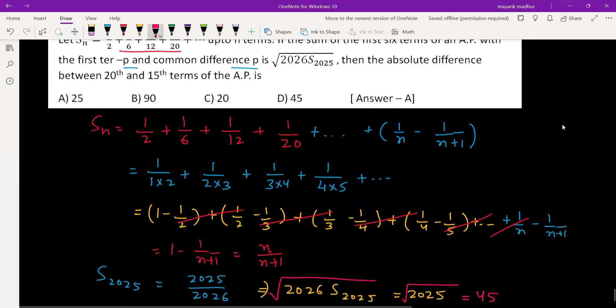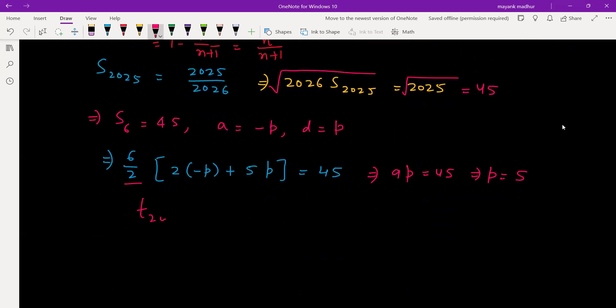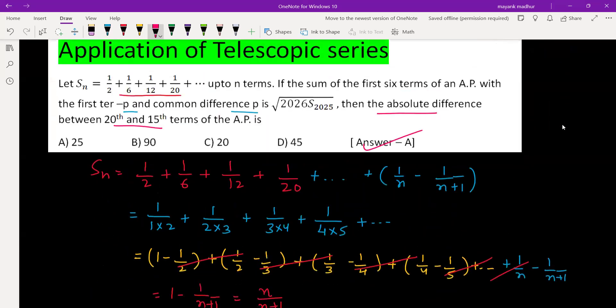Now what we have to find, we have to find the absolute difference between 20th and 15th terms: t_20 minus t_15, which is basically a plus 19d minus a plus 14d, which is 5d. And d is p itself. So 5 into 5 is 25. Answer is A, which is 25.